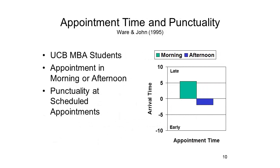For a real-life example, let's return to the study by Ware and John. These investigators measured punctuality in two different situations. Half the subjects were given an appointment in the morning, and the other half given an appointment in the afternoon. When they examined punctuality as a function of the situation rather than the person, they found that students tended to arrive late for morning appointments and a little bit early for appointments scheduled for the afternoon. From this point of view, punctuality depends on a feature of the situation: the time of day at which the appointment is scheduled.